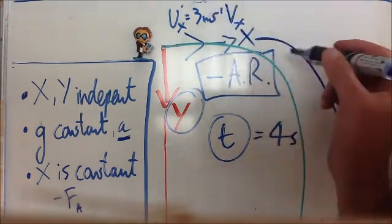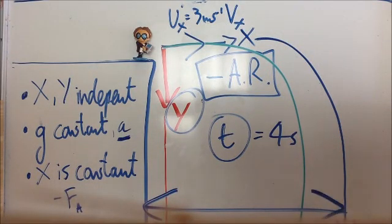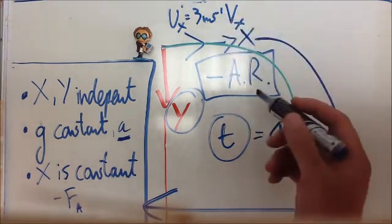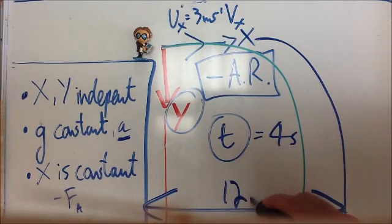then it's really simple to figure out how far away this object will land on the floor. It's just distance equals speed times time, so that's 3 times 4, and that will give us a distance of 12 meters.